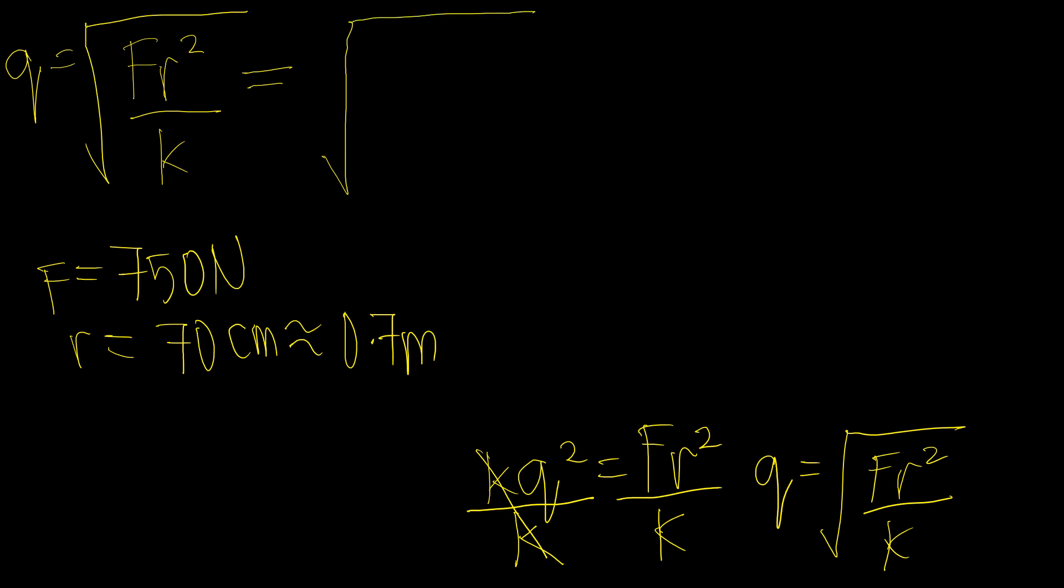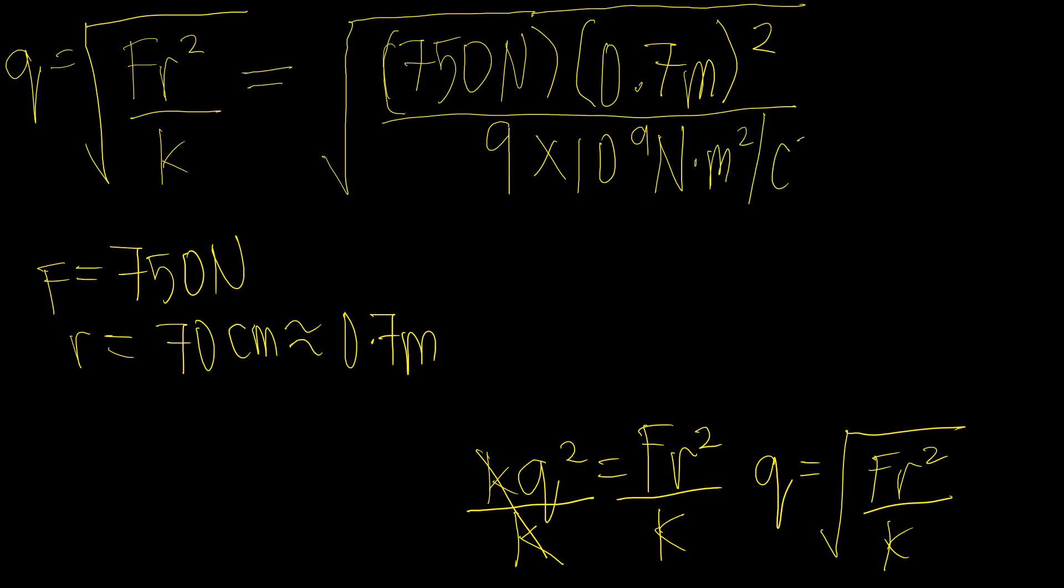Now, substitute lang natin itong mga given dito sa formula. So we have F is 750 N times R squared, which is 0.7 meters squared, over our constant, which is 9 times 10 raised to 9 N meters squared per coulomb squared.